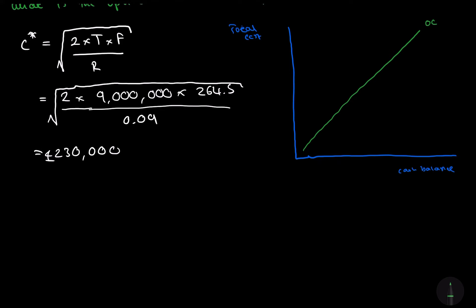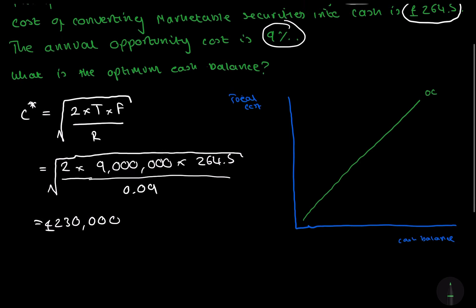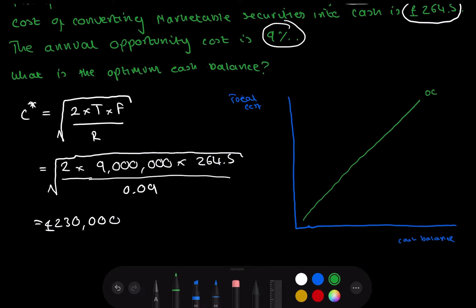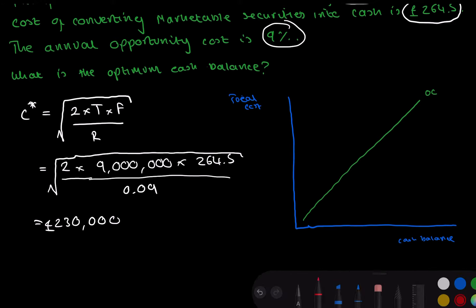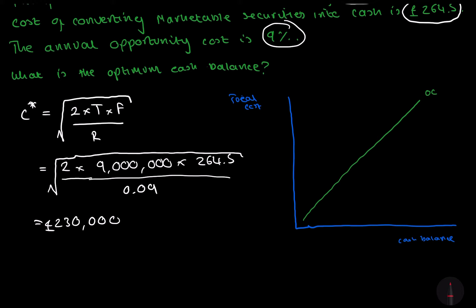As we increase our cash balance, the total opportunity cost, the 9% on the marketable securities we are losing out. So the higher our cash balance, the more money we're losing.